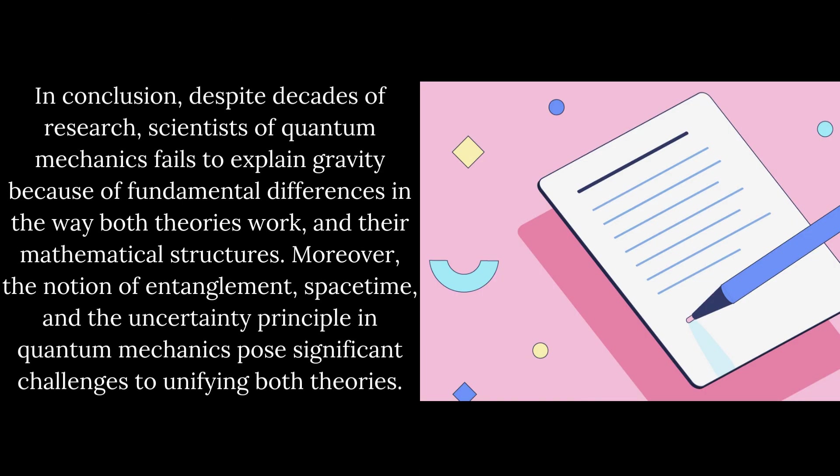In conclusion, despite decades of research, scientists of quantum mechanics fail to explain gravity because of fundamental differences in the way both theories work and their mathematical structures. Moreover, the notion of entanglement, spacetime, and the uncertainty principle in quantum mechanics pose significant challenges to unifying both theories.